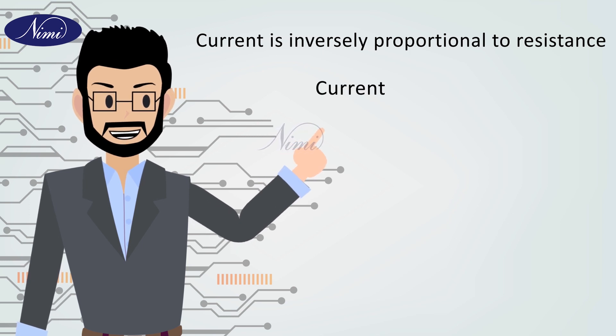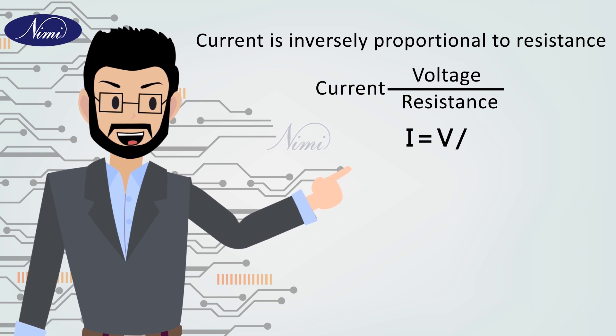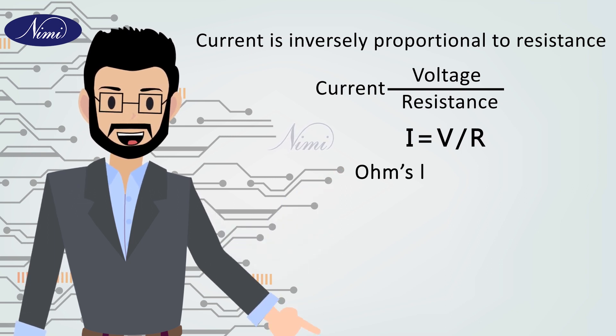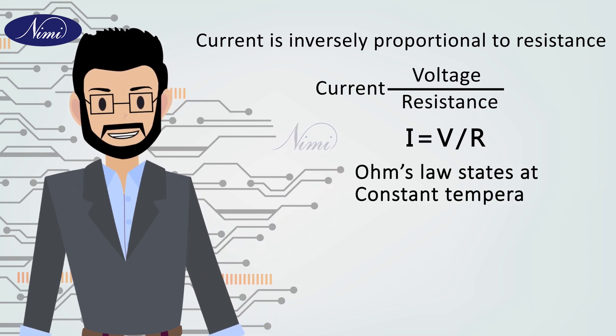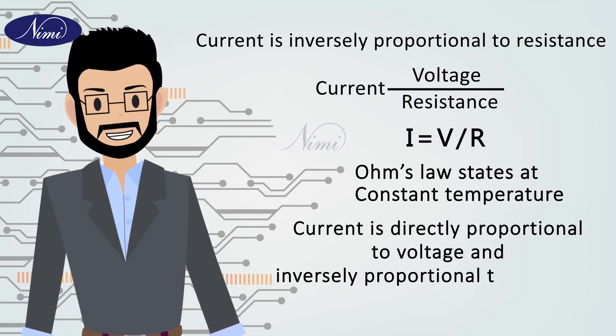Altogether, current is voltage by resistance. I is equal to V by R. Finally, Ohm's law states that at constant temperature, current is directly proportional to the voltage and inversely proportional to the resistance.